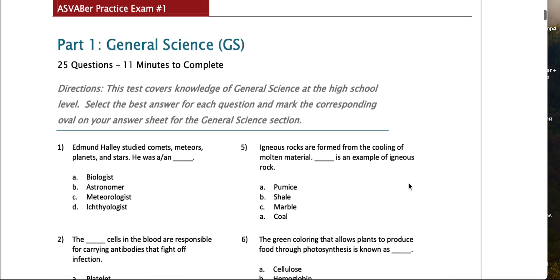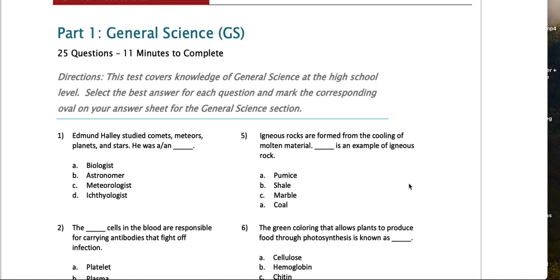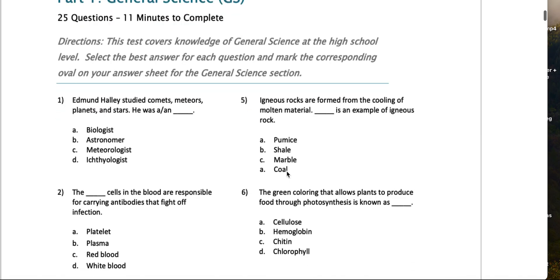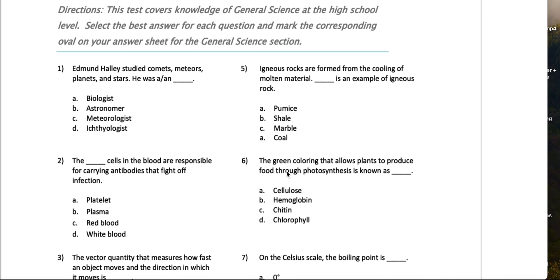So without much ado, let's jump right into it. Number one says Edmund Halley studied comets, meteors, planets, and stars. He was a biologist, astronomer, meteorologist... I can't even pronounce that last word, but I would say that he was an astronomer.